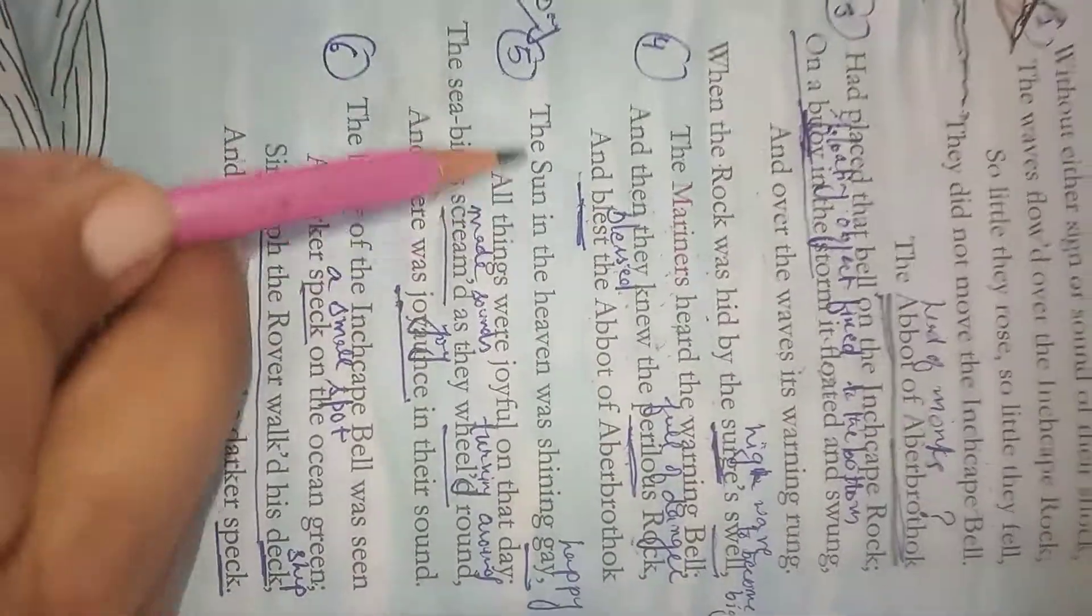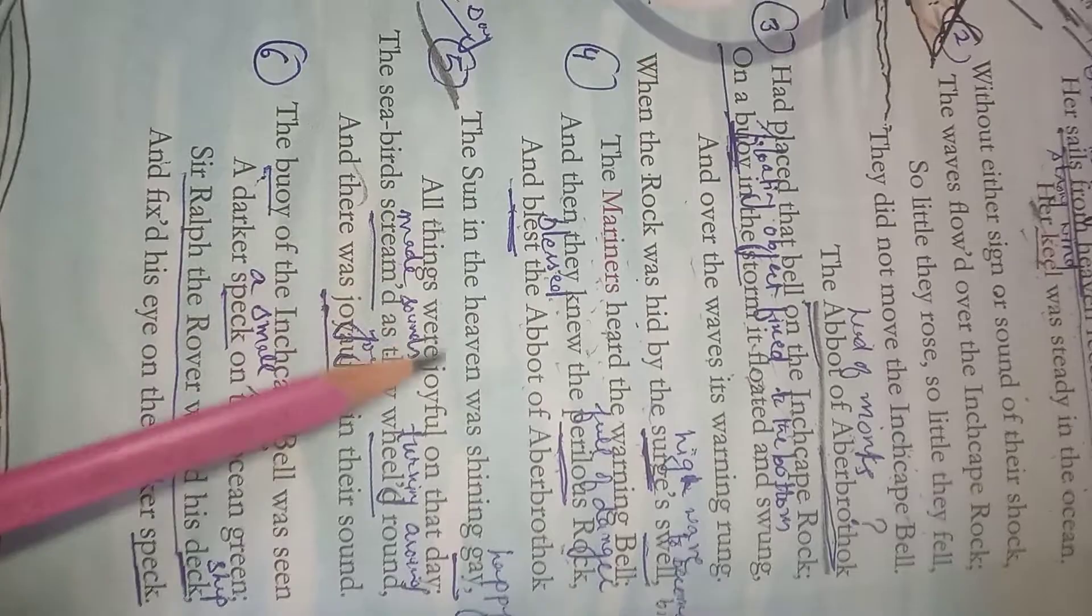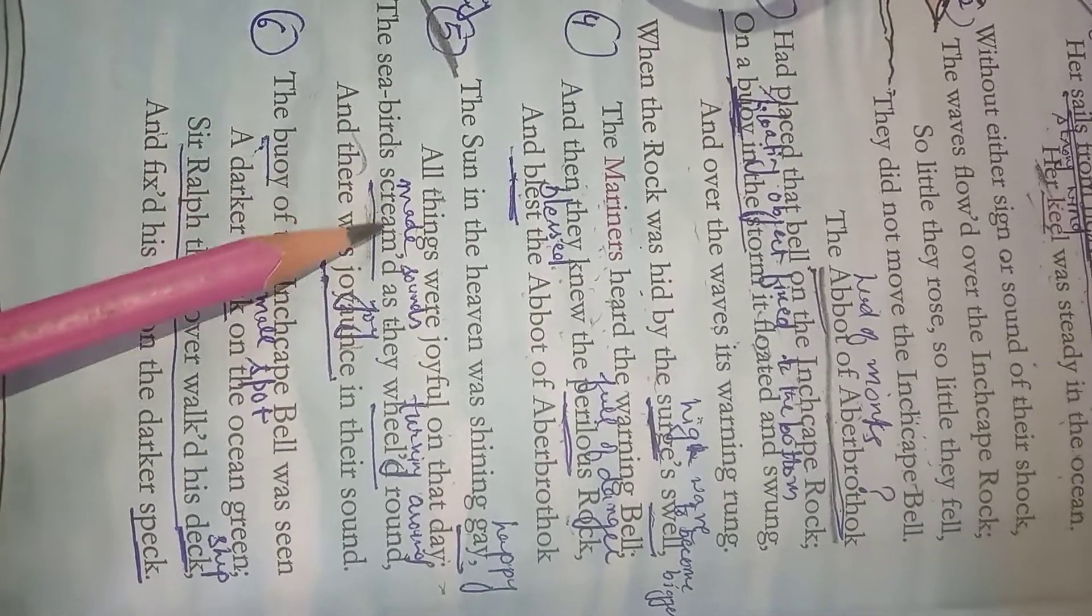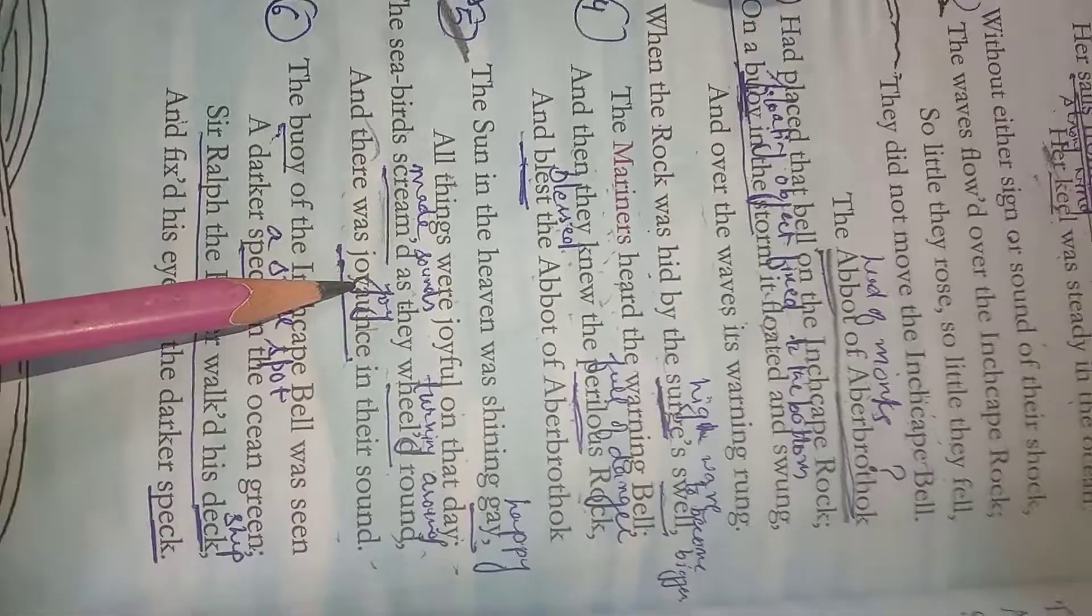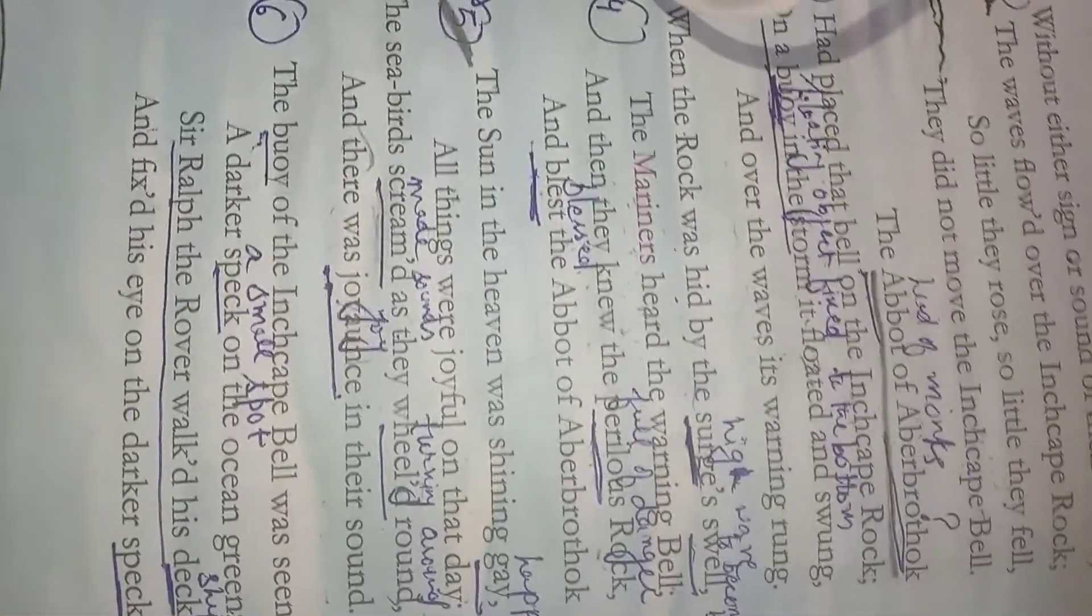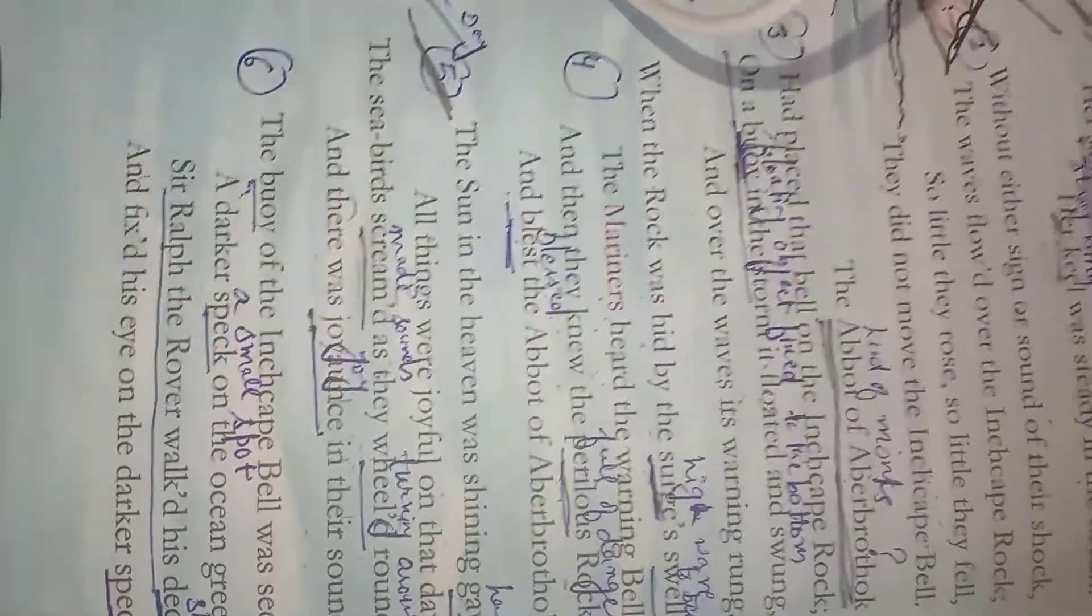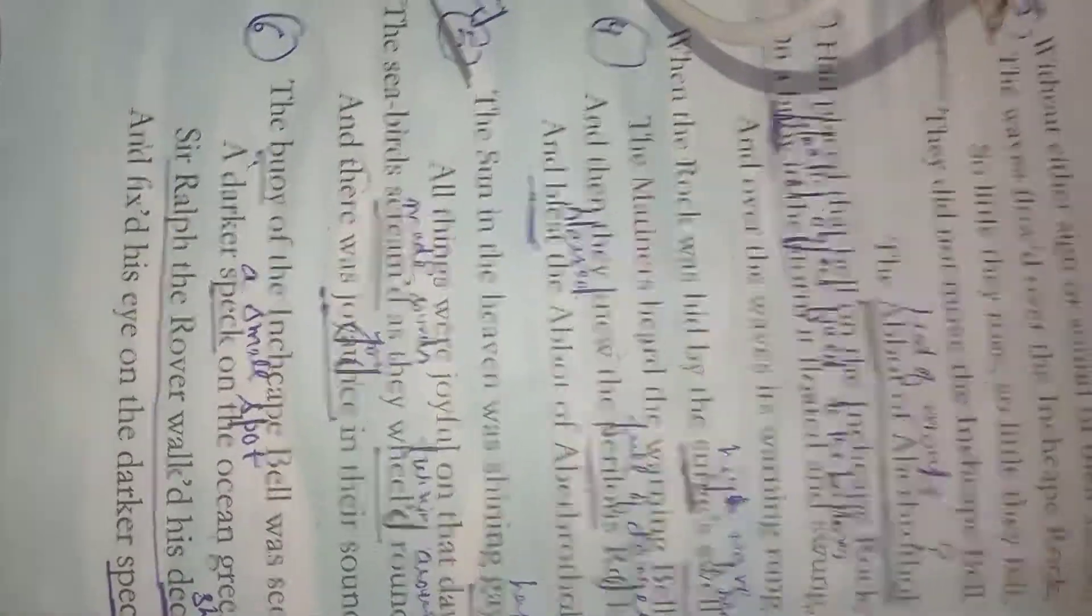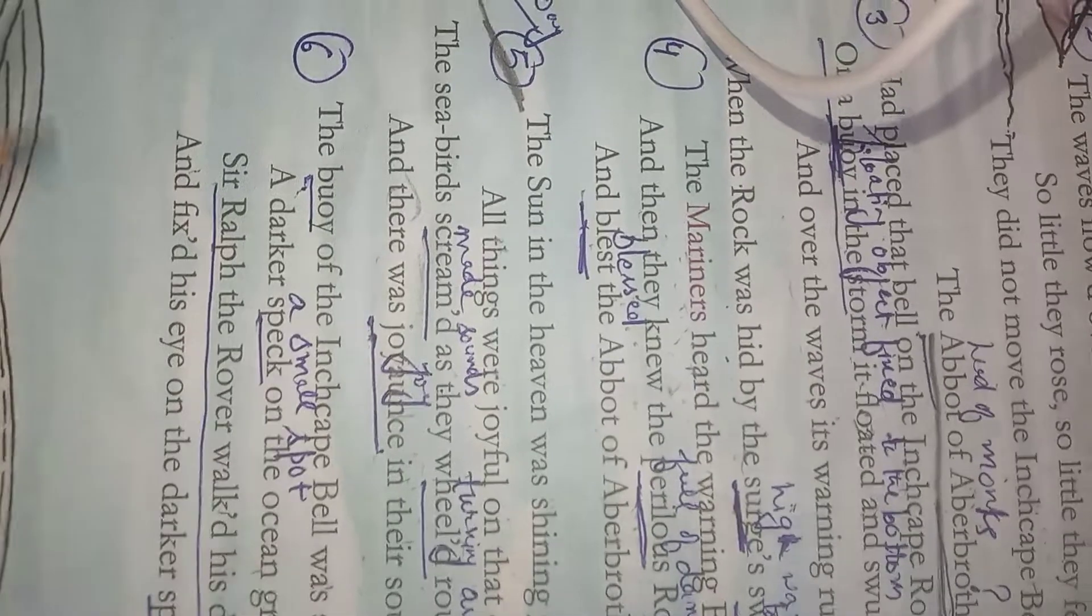Next, one day what happened? Here the story is going to change. This is the background, this is the basic introduction of the poem. Now the story is going to change. One day the sun in the heaven was shining gay - gay means happy. All things were joyful on that day. The sea birds screamed - screamed means made sounds - as they wheeled around. Wheeled means turning around. And there was joyance in their sound - joyance means joy. One day when everything was fine, the birds were flying around the sea and screaming. Even the birds were also joyful, means here happy atmosphere is described. As everything was well, the birds were also flying here and there. They were seagulls and other birds were touching the sea. Everything was completely joyful, everything was completely full of life.